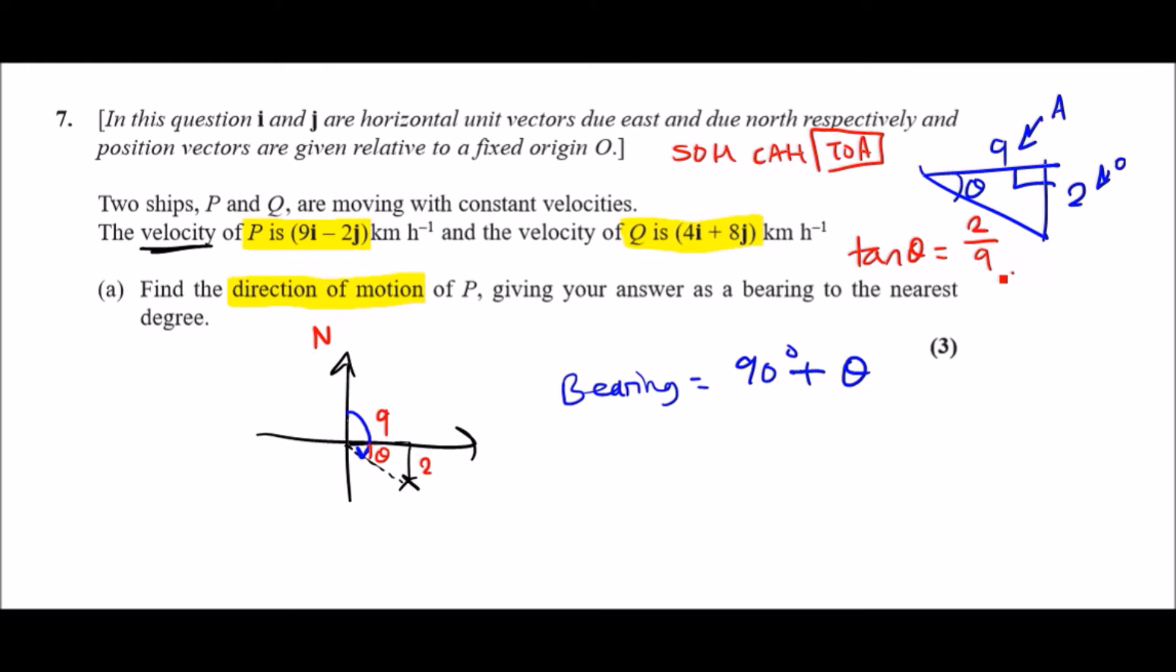All you want to do is tan inverse this. Make sure your calculator is in degree mode, then tan inverse the solution and you should get 12.5 degrees. So theta is 12.5 degrees, and now you just add 90 to it, so plus 90 gives you a total bearing of 102.5 degrees.